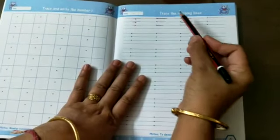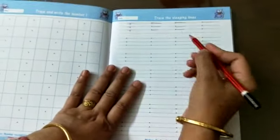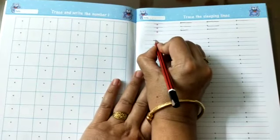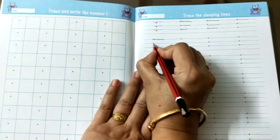On page number nine we have sleeping lines, as we have done earlier. Same way, you have to write the date here and let the child trace the line. Keep on saying that this is a sleeping line.